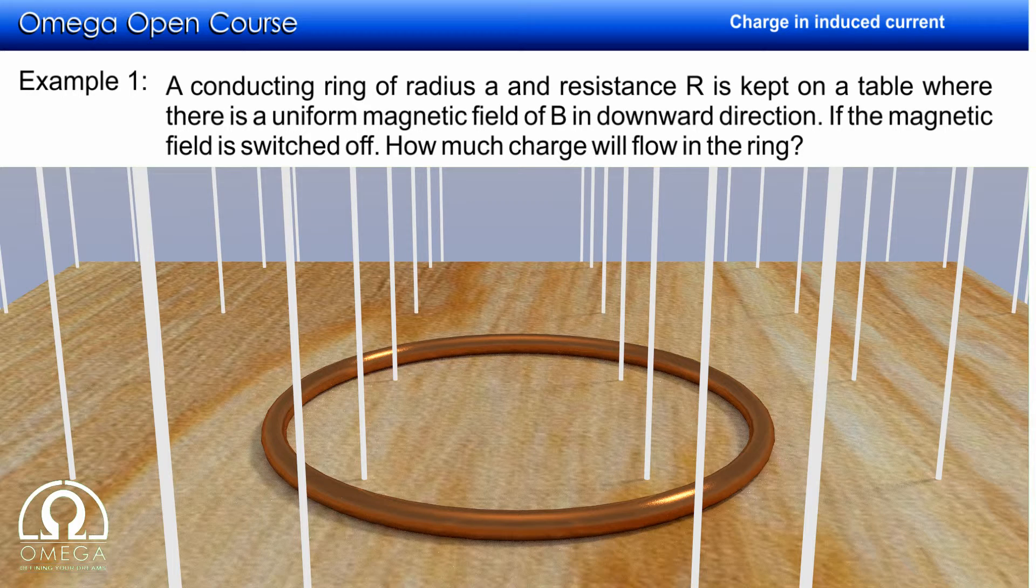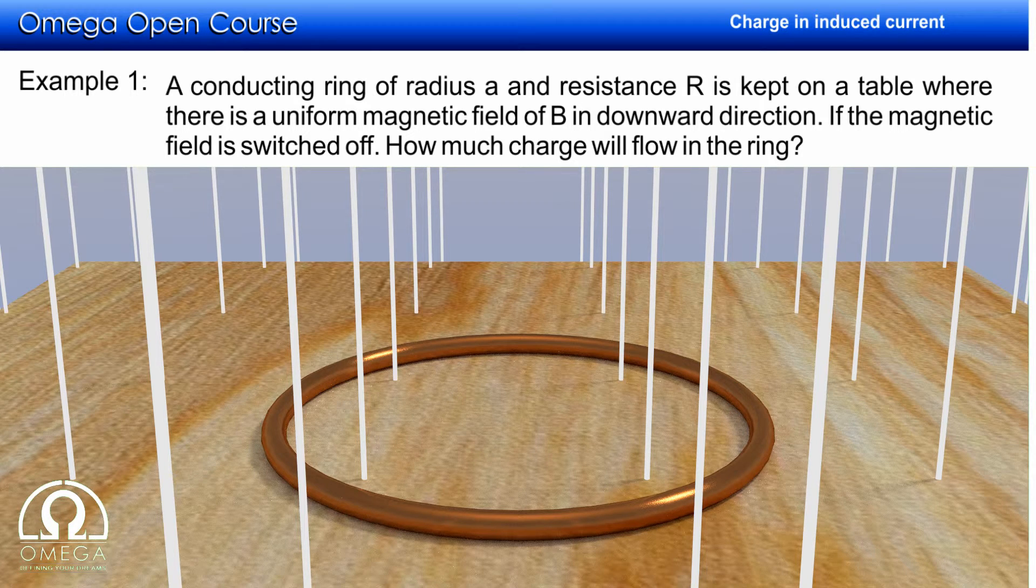Suppose a conducting ring of radius A and resistance R is kept on a table where there is uniform magnetic field B in vertically downward direction. If the magnetic field is switched off, how much charge will flow through the ring?